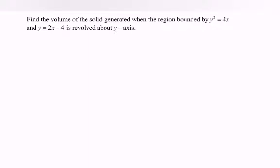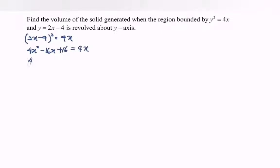Where we have y equals 2x minus 4, substitute into y squared. So we have (2x minus 4) squared equals 4x. Expanding: 4x squared minus 16x plus 16 equals 4x. So 4x squared minus 20x plus 16 equals 0. Dividing by 4, we have x squared minus 5x plus 4 equals 0.